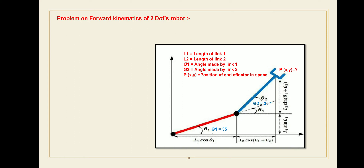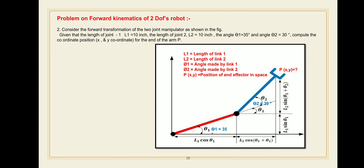Hello friends, we will continue with the next problem on forward kinematics of a 2 degrees of freedom robot. The problem statement: consider the forward transformation of a two-joint manipulator as shown in the figure. Given that the length of joint number one L1 is equal to 10 inches, the length of joint number two L2 is 10 inches, angle theta 1 is 35 degrees, and angle theta 2 is 30 degrees. Compute the coordinates — position X and Y — for the end effector of arm P.